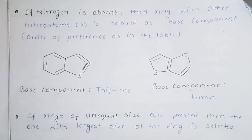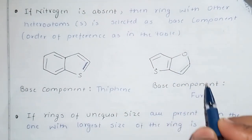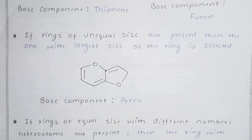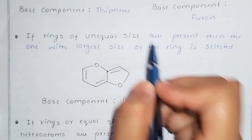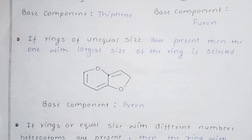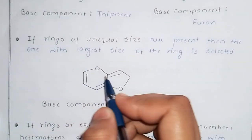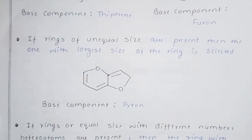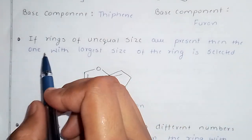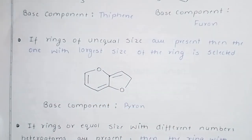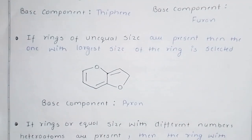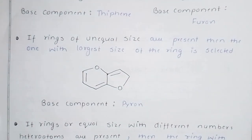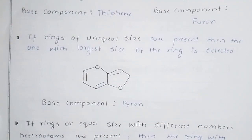We give preference to sulfur — sulfur-containing compounds are called thiophene. Next in the order of preference is oxygen. We have a table with the order: oxygen, sulfur, and nitrogen. If rings are of unequal size — for example one is five-membered and one is six-membered — then the largest ring is selected as the base compound. The six-membered ring with oxygen is named pyran.